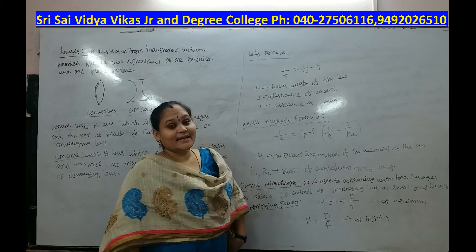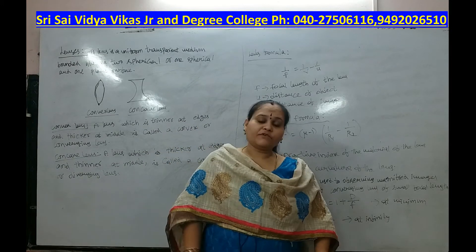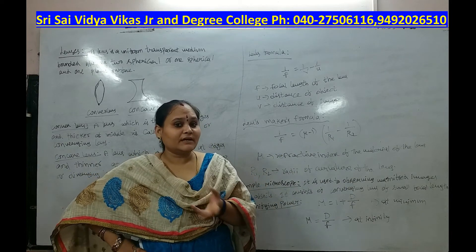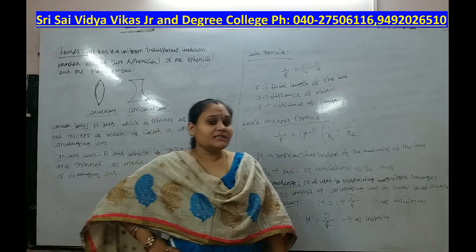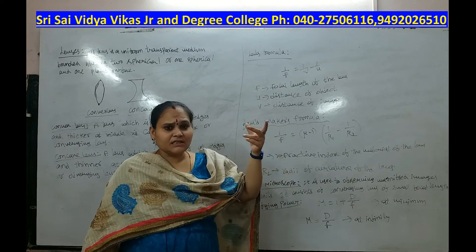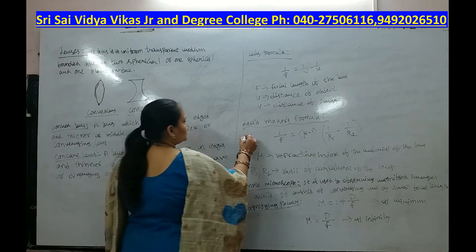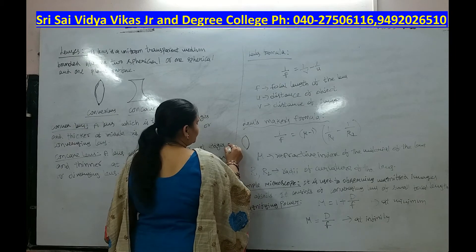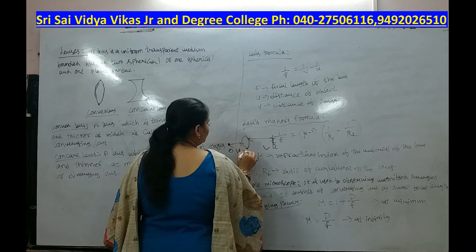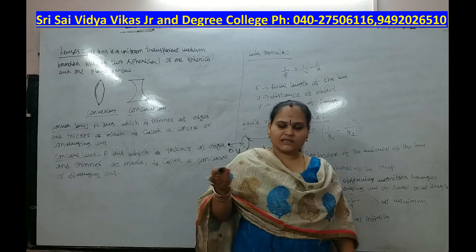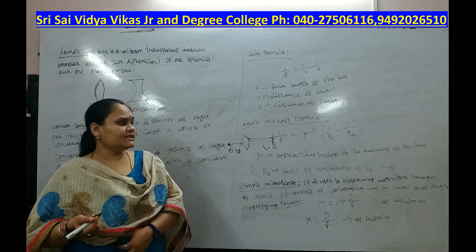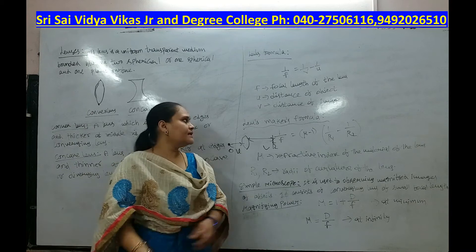Next is the lens formula. The lens formula is: 1/F = 1/V − 1/U. Here, F is the focal length of the lens, V is the distance of the image from the lens, and U is the distance of the object from the lens.